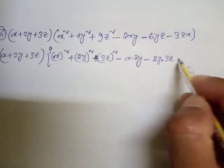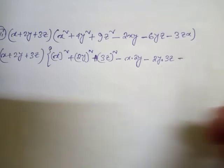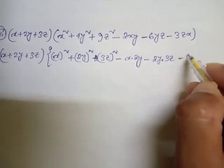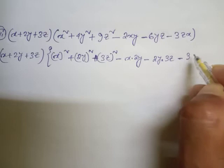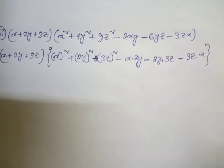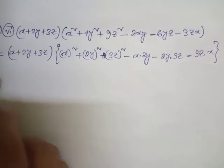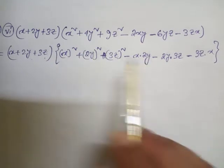That is a + b + c, a² + b² + c² - ab - bc - ca, which means the formula is actually a³ + b³ + c³ - 3abc.